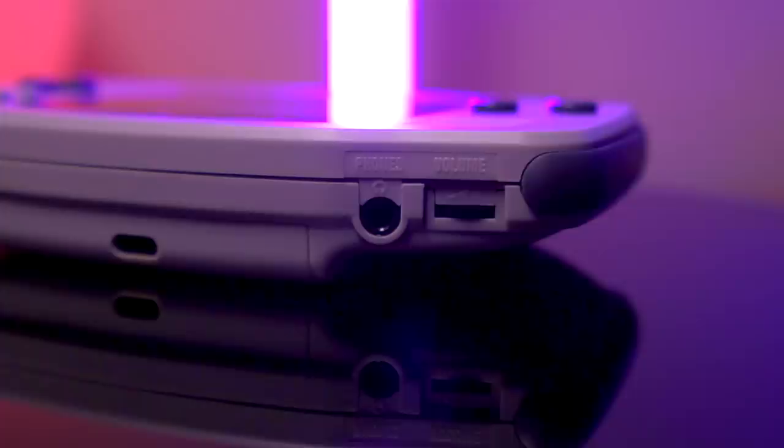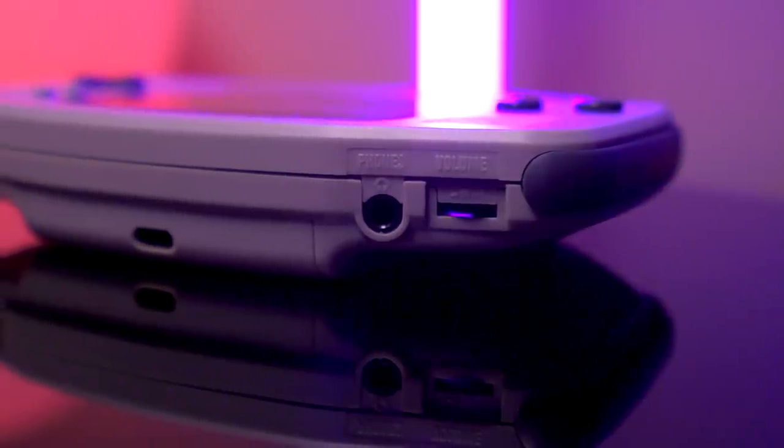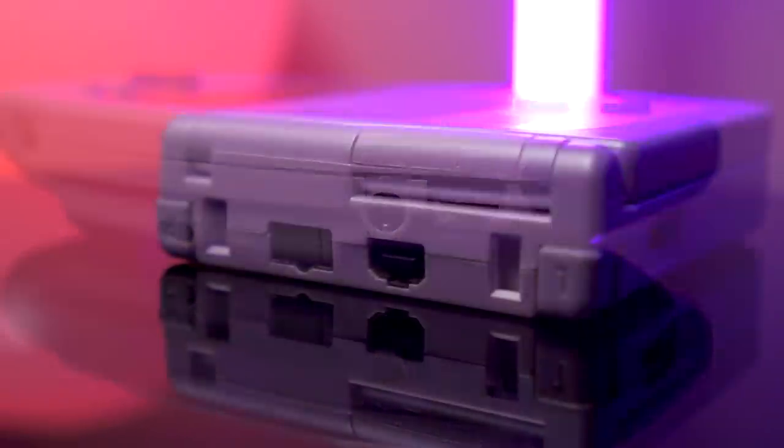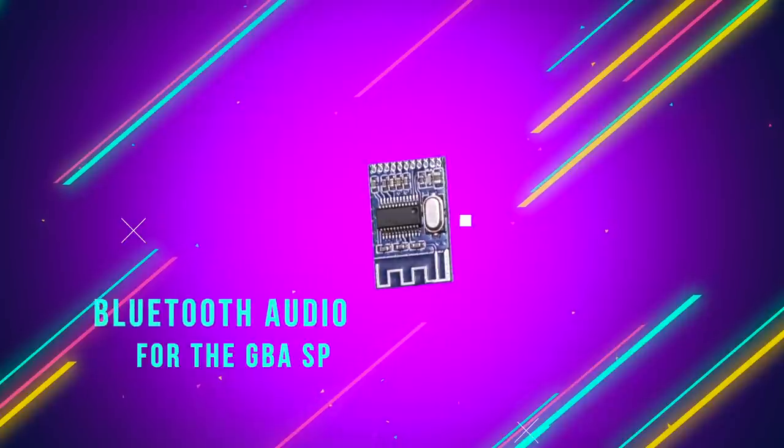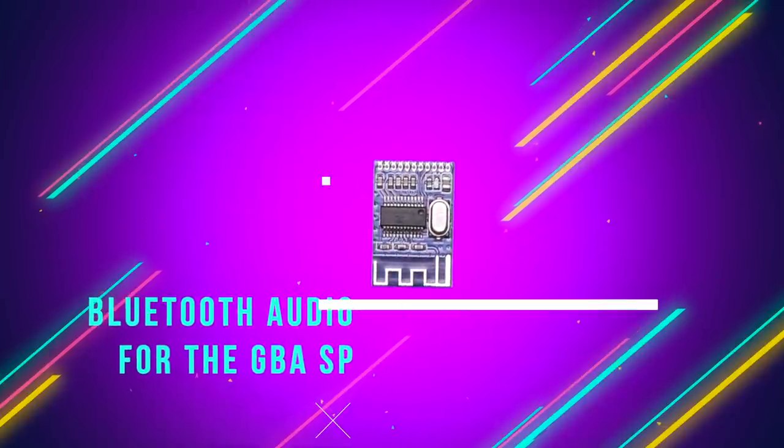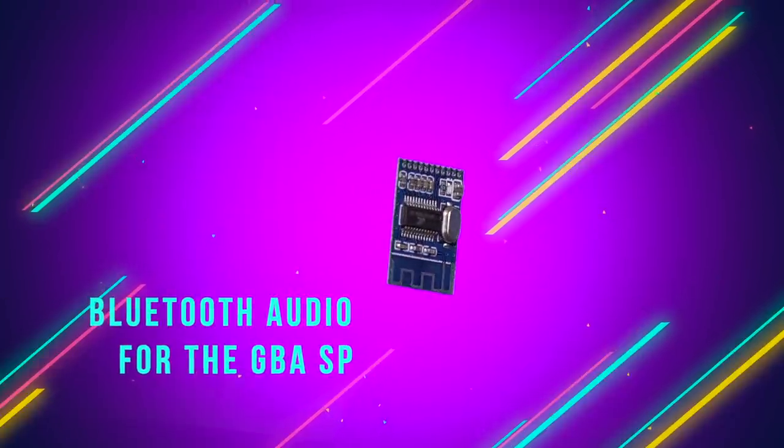As you know, the SP removed the 3.5mm jack which came standard on the AGB and instead employed a proprietary port in order to use headphones. Adding Bluetooth will allow you to use wireless headphones and also the ability to stream to external speakers. Let's get right into it.